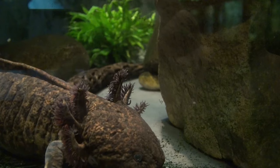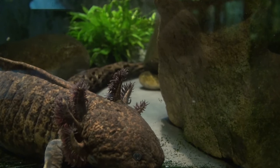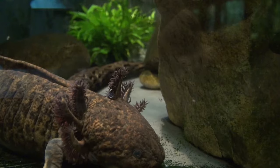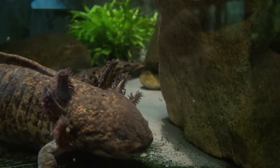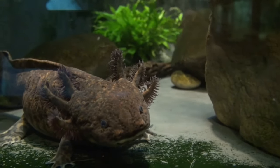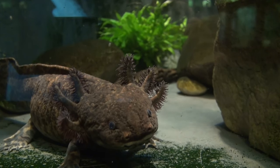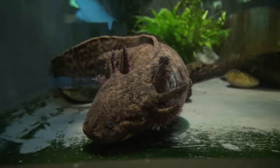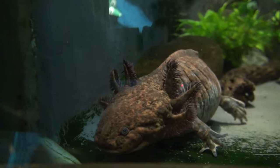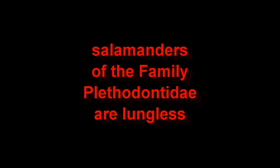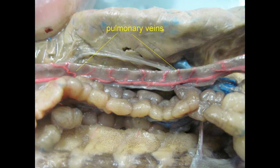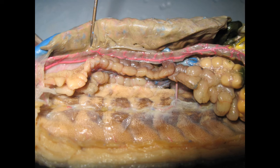Some adult salamanders undergo neoteny — they retain juvenile characteristics and may maintain external gills throughout their lives. This means some salamanders have a variable type of circulation for gas exchange compared to others. While most salamanders possess lungs, and thus prominent blood vessels which perform gas exchange in these lungs, such as the pulmonary veins seen here,